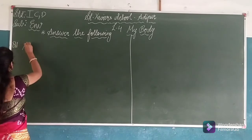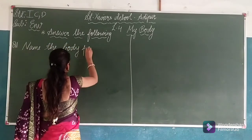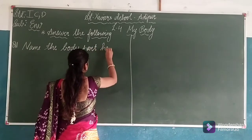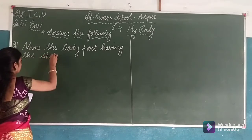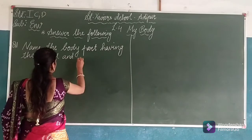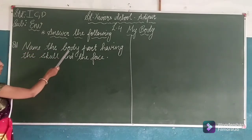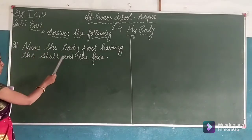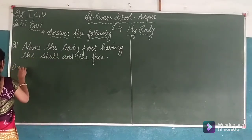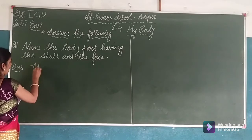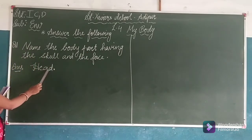Question number 1: Name the body part having the skull and the face. What is the question saying? Name the body part — the body part having the skull and the face. The skull and face — which part are they? Yes, the answer is: the skull and the face are parts of the H-E-A-D, head. Name the body part having the skull and the face? Answer is H-E-A-D, head.